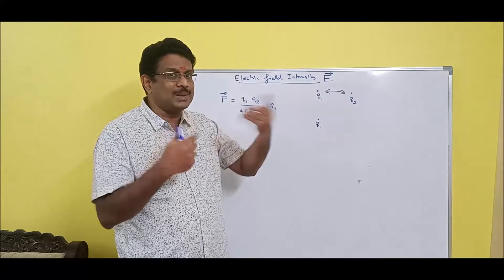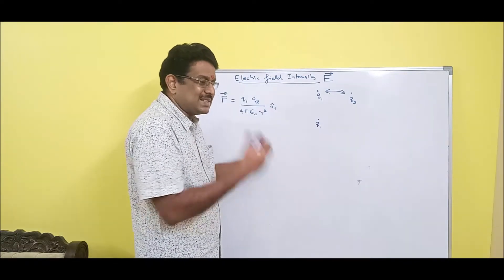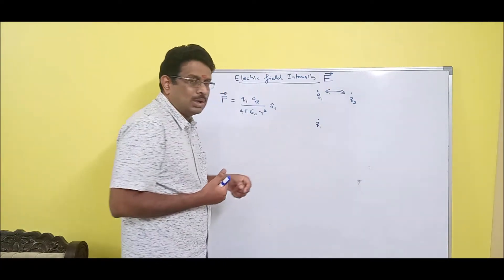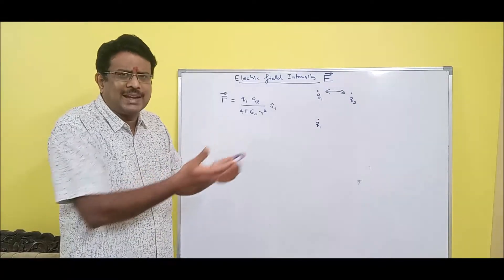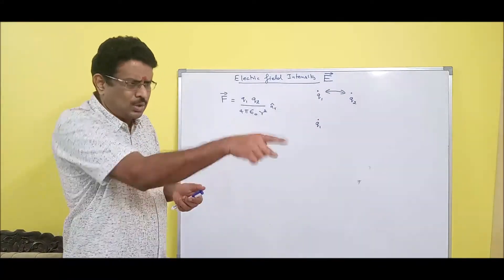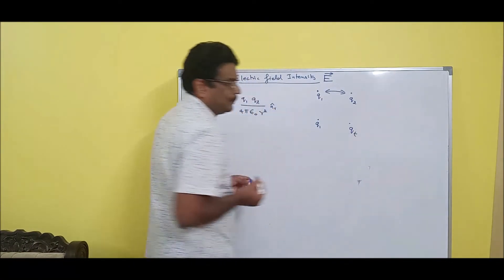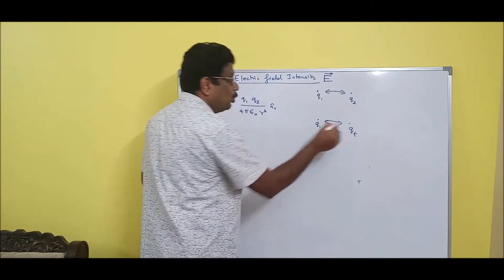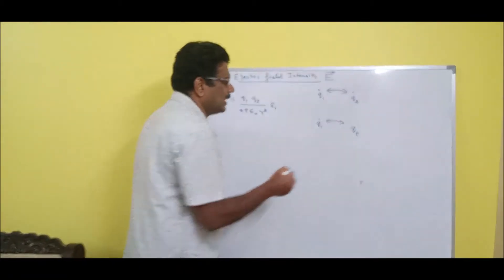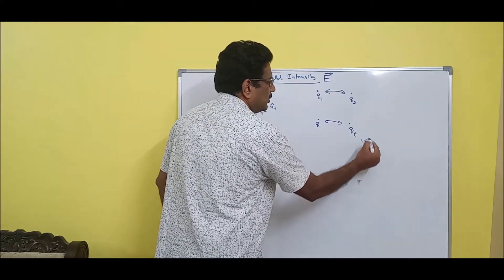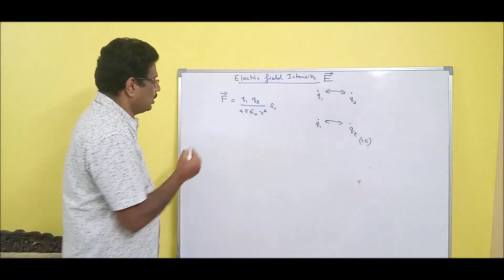Now I am going to give a new concept. Mr. Q1 wants to check his strength with a reference person — like a referee, trainer, coach, or faculty — somebody as a reference. That reference test person is called Qt. There is still a force, and Qt can tell how much strength Q1 has because Qt is a known person. Usually we take Qt as one positive coulomb charge — it is just a reference.